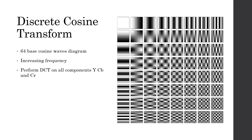Each DCT coefficient represents the contribution of the individual square in this diagram to the original 8x8 block. This means that some blocks can contribute more to the original 8x8 block than others. The higher the coefficient, the more it contributes to the 8x8 block, and vice versa — the lower the coefficient, the less it contributes. The lower frequency coefficients will be much higher than the high frequency coefficients, because human eyes are less susceptible to high frequencies.